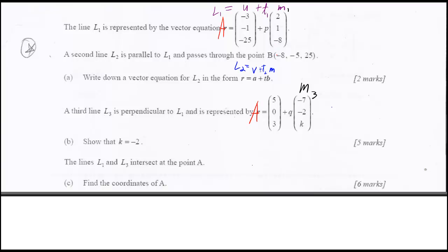So if they're both going to be equal to A, then they have to be equal to each other. So I can write negative 3, negative 1, negative 25, plus P times 2, 1, negative 8, has to equal 5, 0, 3, plus Q times negative 7, negative 2. And remember, we figured out K was equal to negative 2, so negative 2 again.